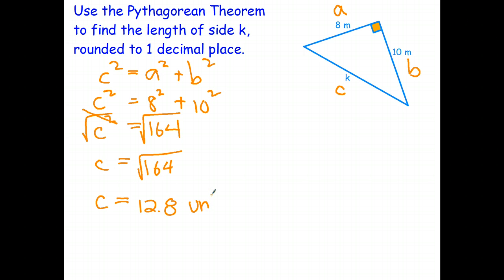So the answer is 12.8. And because I do have units, it's meters. So round that off to one decimal place. The length of the hypotenuse is 12.8 meters.